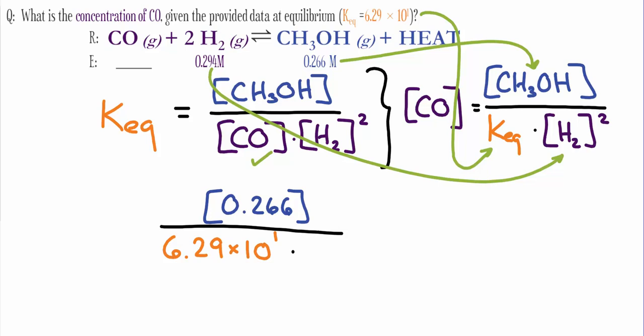We're going to follow order of operation and use additional parentheses as necessary to make sure that this comes out right. We're going to do 0.266 divided by the product of 6.29 times 10 to the 1 and 0.294 raised to the second power.